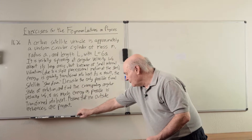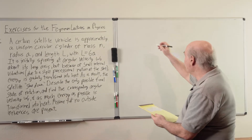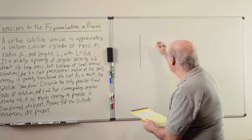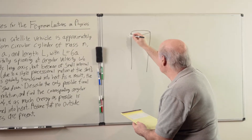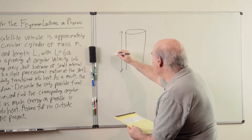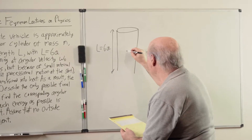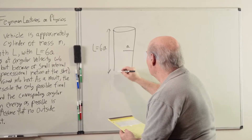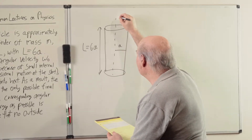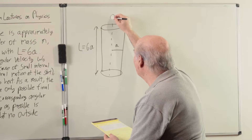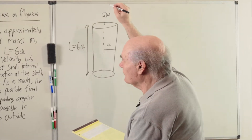Let's draw a diagram. What we have is a cylinder — the length is L equals 6A and the radius is A. And it's spinning about the long axis at omega zero.